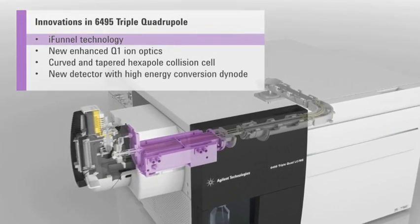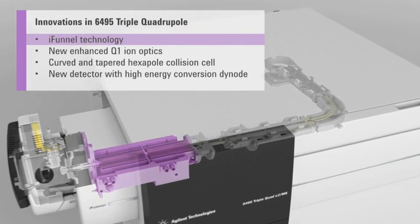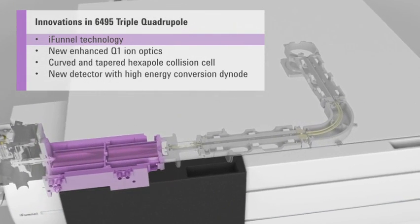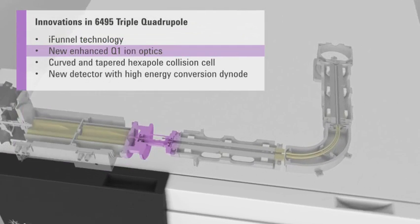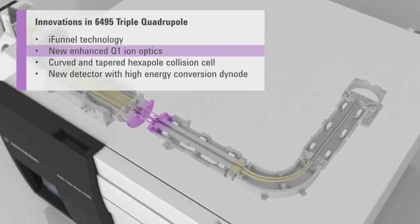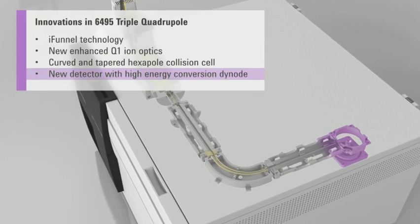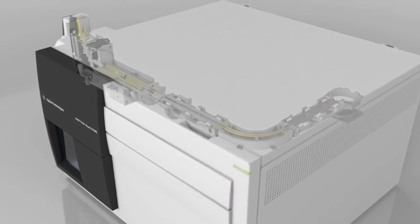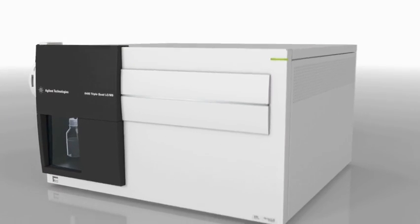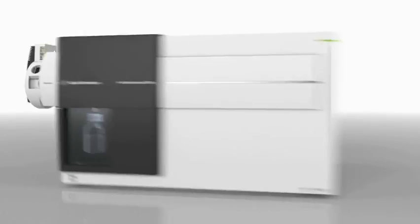Based on proven iFunnel technology, the Agilent 6495 triple quadrupole LC-MS introduces an optimized new ion optical path, collision cell, and detector. All these elements work in concert to bring users more confidence in their results.